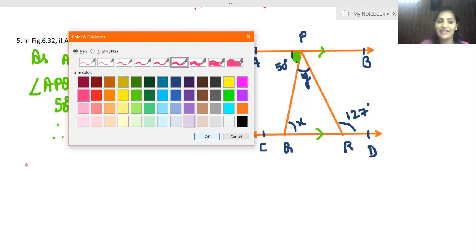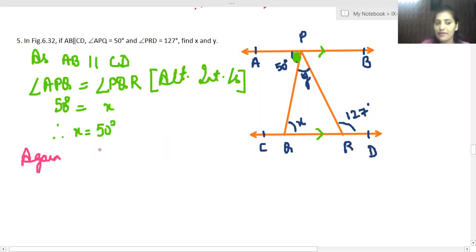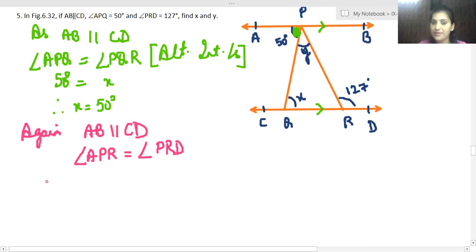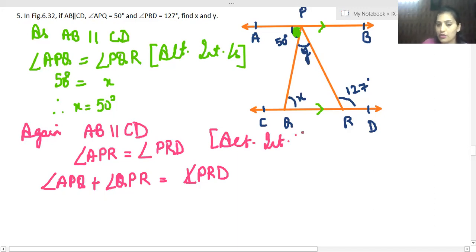Right, again AB is parallel to CD. In this case, angle APR is equal to angle PRD. Is that clear? So reason: same alternate interior pair of angles which are supposed to be equal in nature. Angle APQ is 50 degrees.